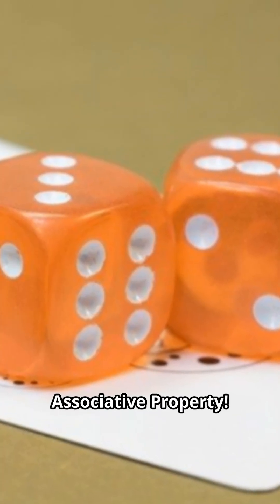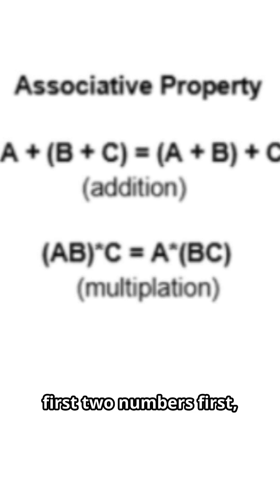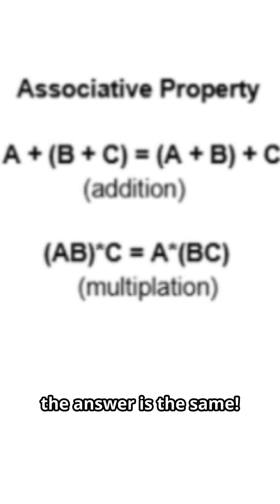Next is the associative property. How you group things doesn't change the sum or product. Whether you add the first two numbers first or the last two numbers first, the answer is the same.